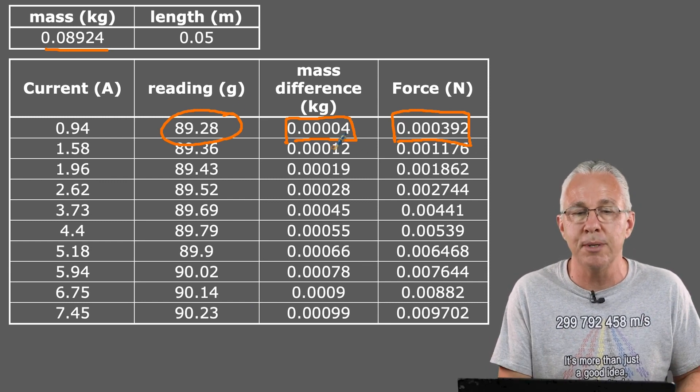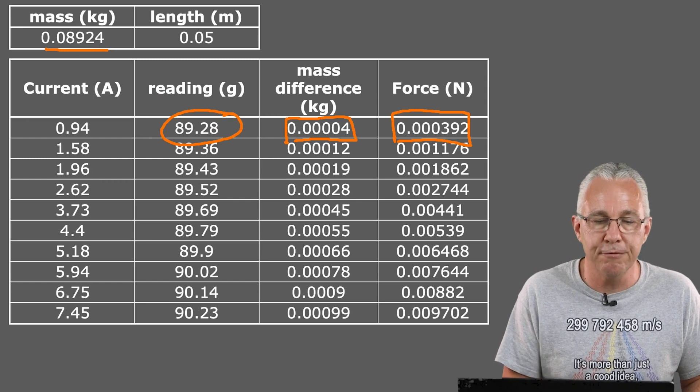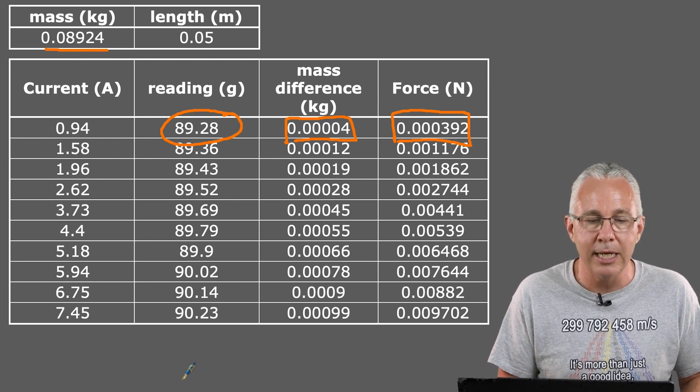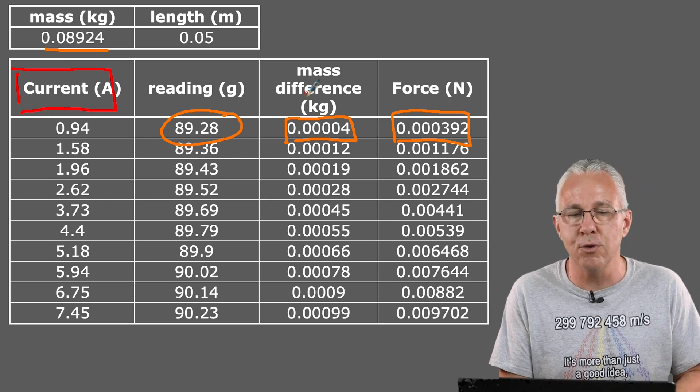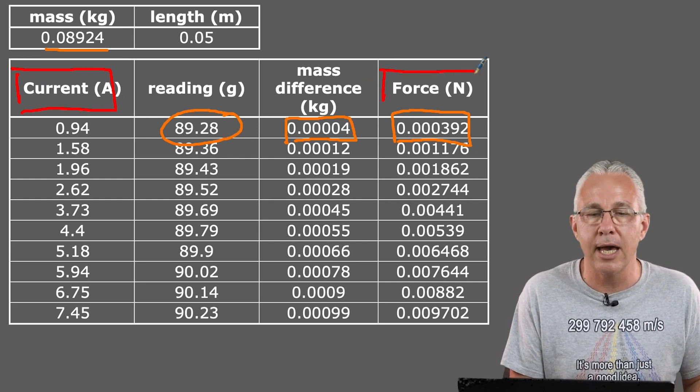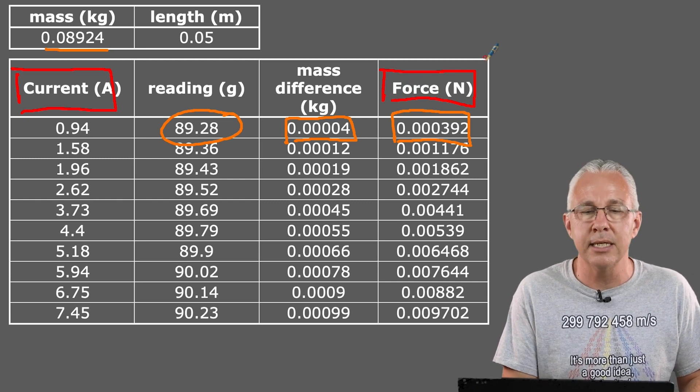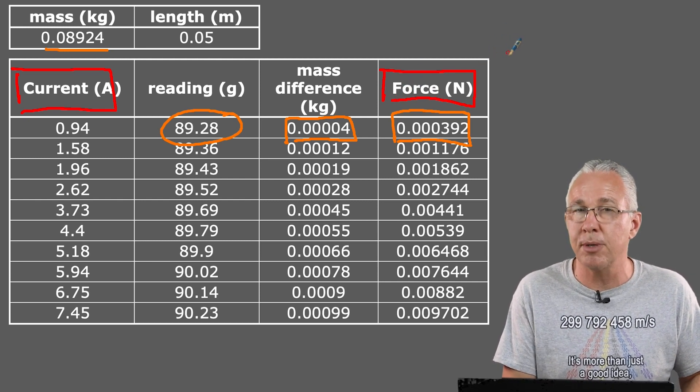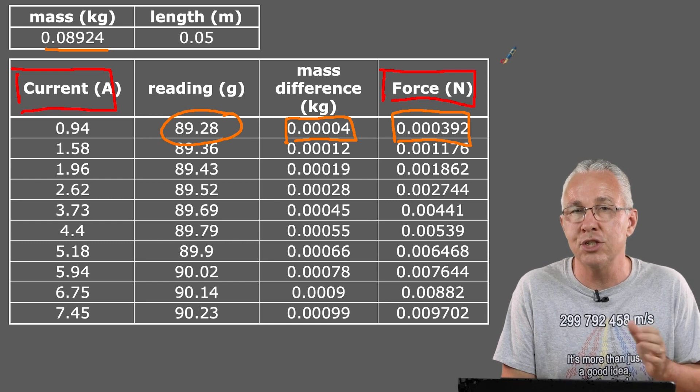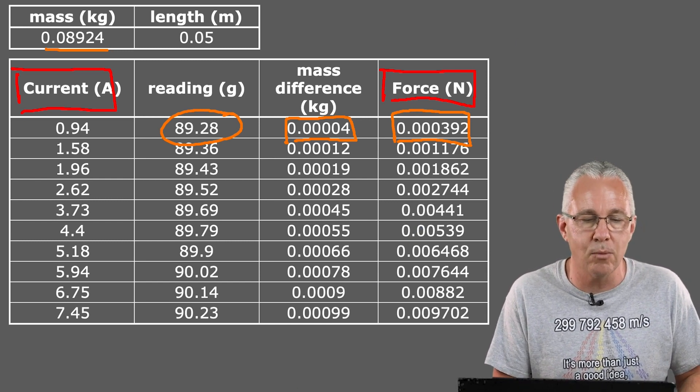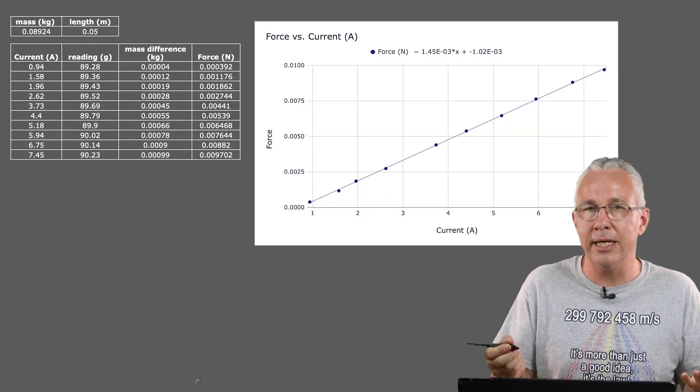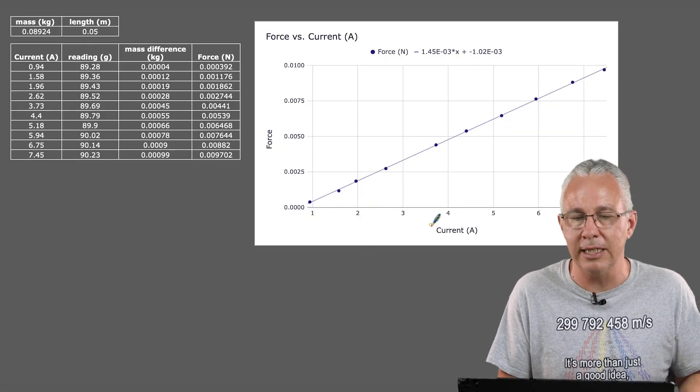The next thing to do is to graph the data. But of course we want to graph the relationship between two variables. The first variable we want to look at is the current, which is this, and the second thing is the force due to that particular kind. So what that means is if I graph that relationship, I should put the current on the x-axis and the force on the y-axis.